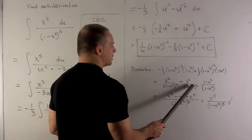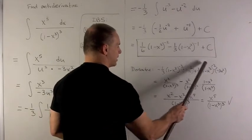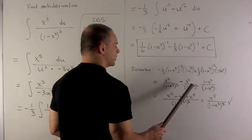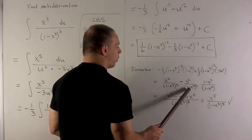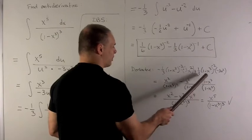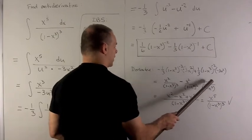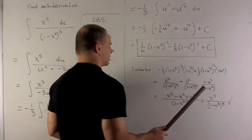This x squared over 1 minus x cubed squared term which is just this. What I'm going to do here is I need one more 1 minus x cubed term in here to get that to 3. So I multiply by 1 in the form 1 minus x cubed over 1 minus x cubed.